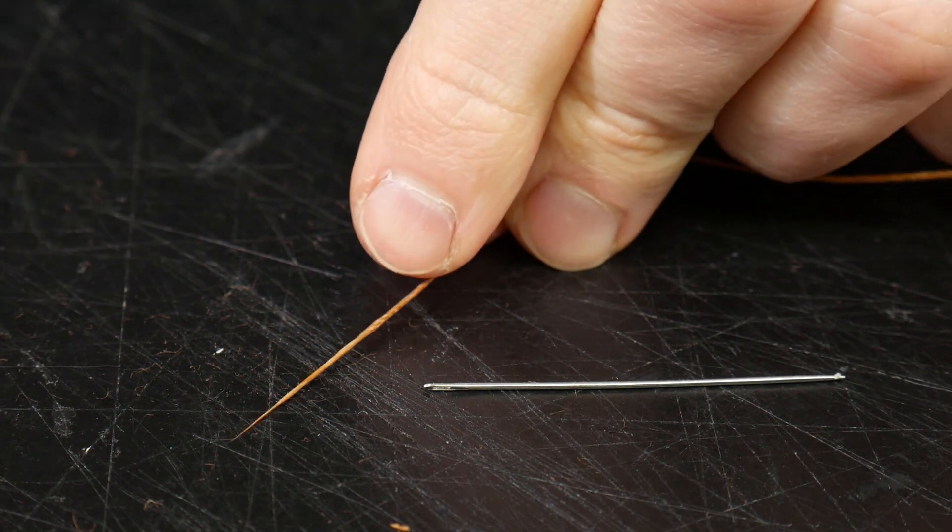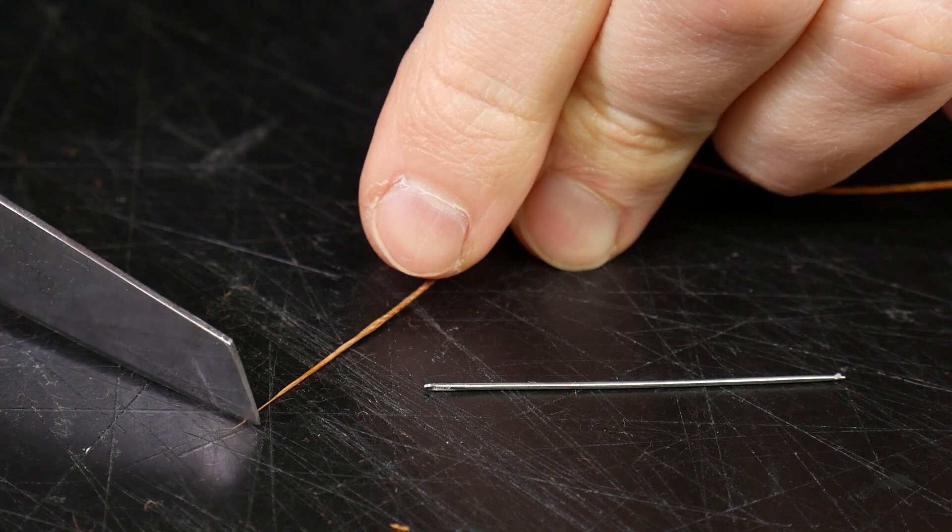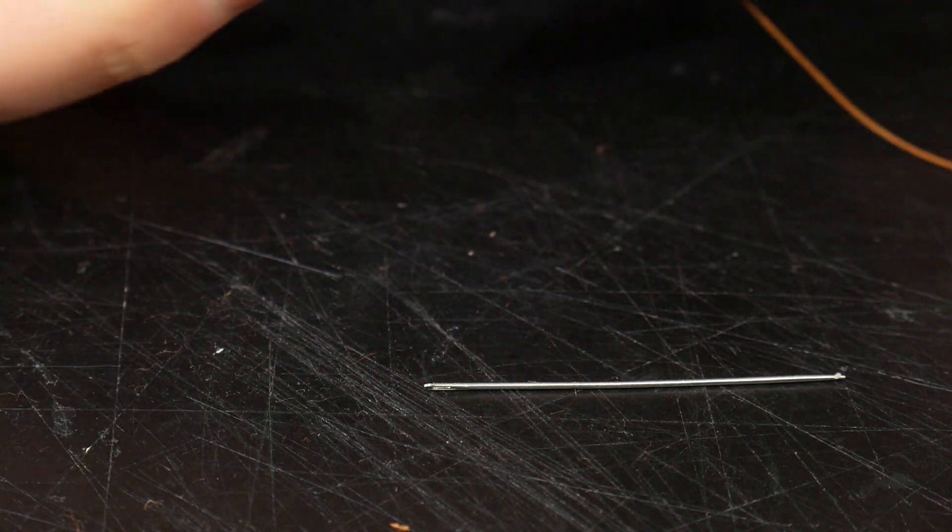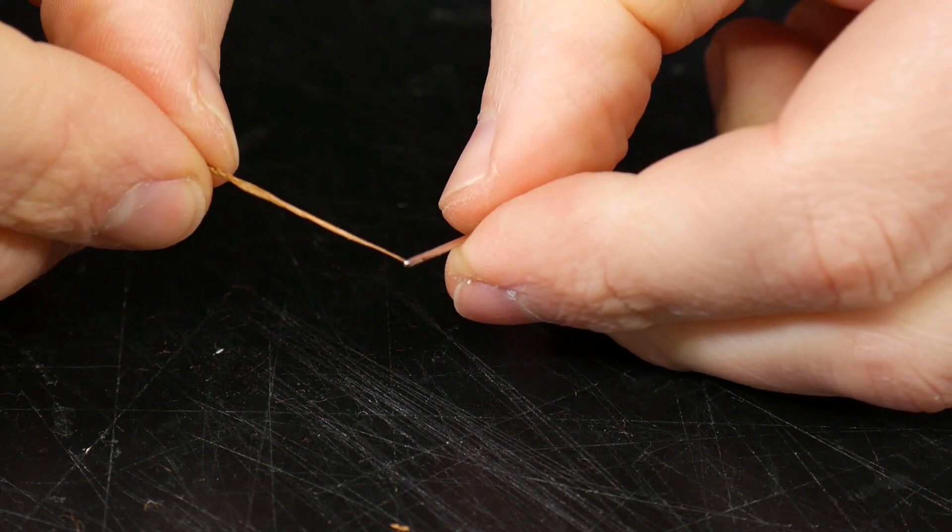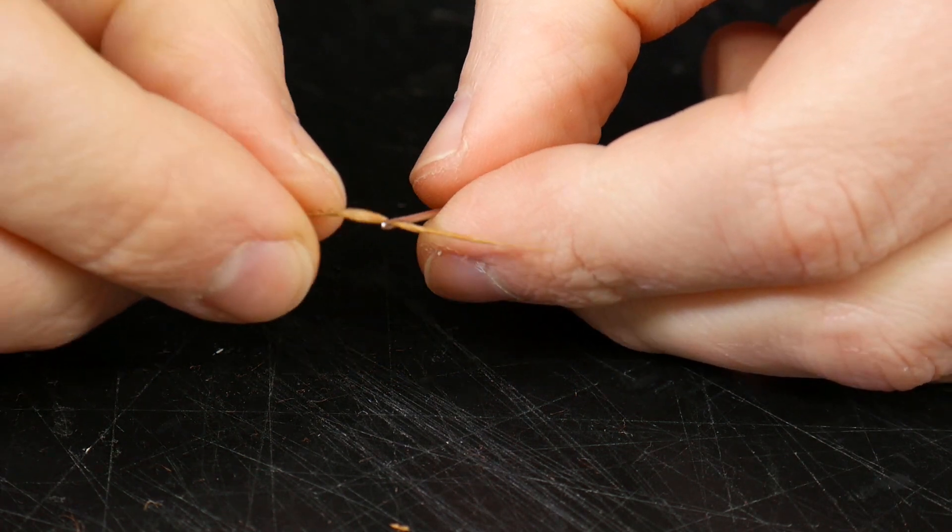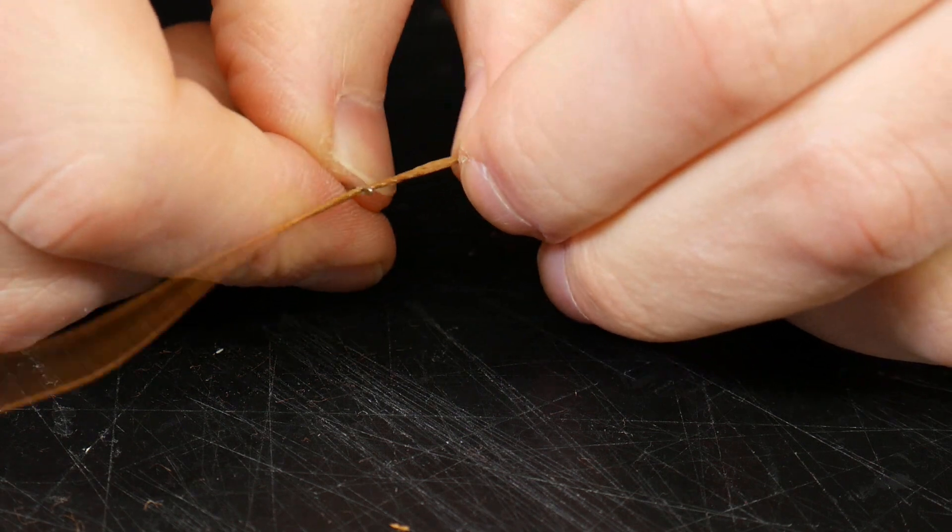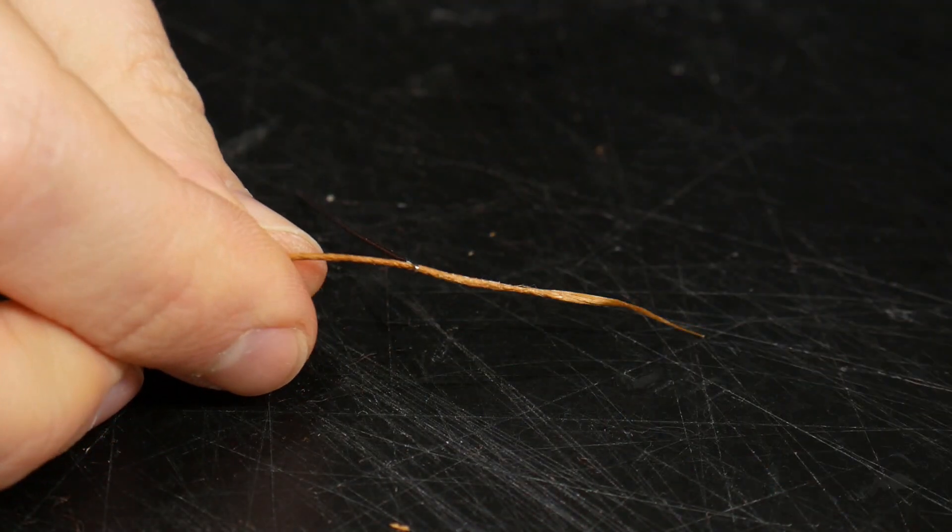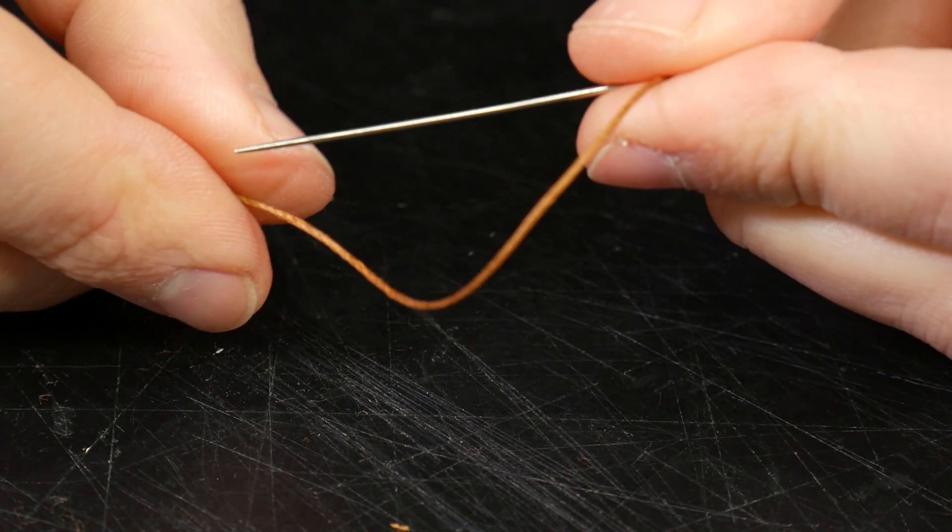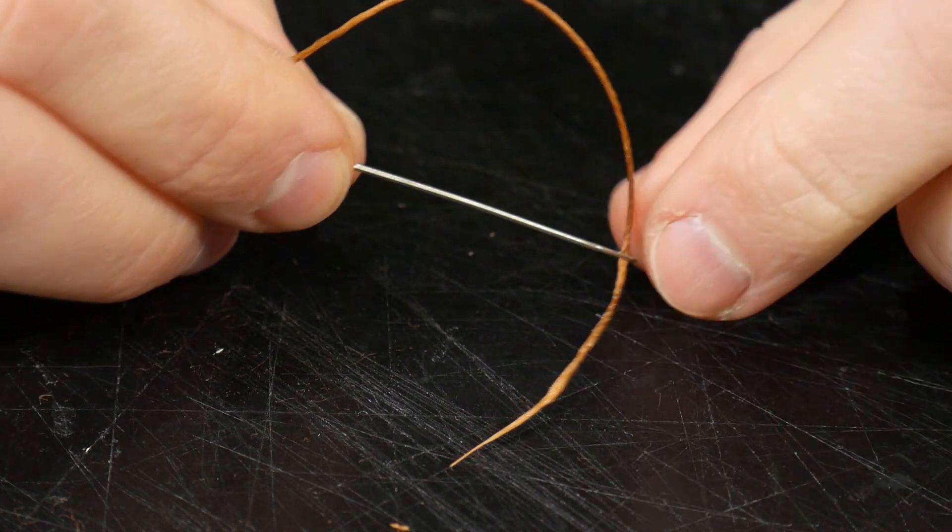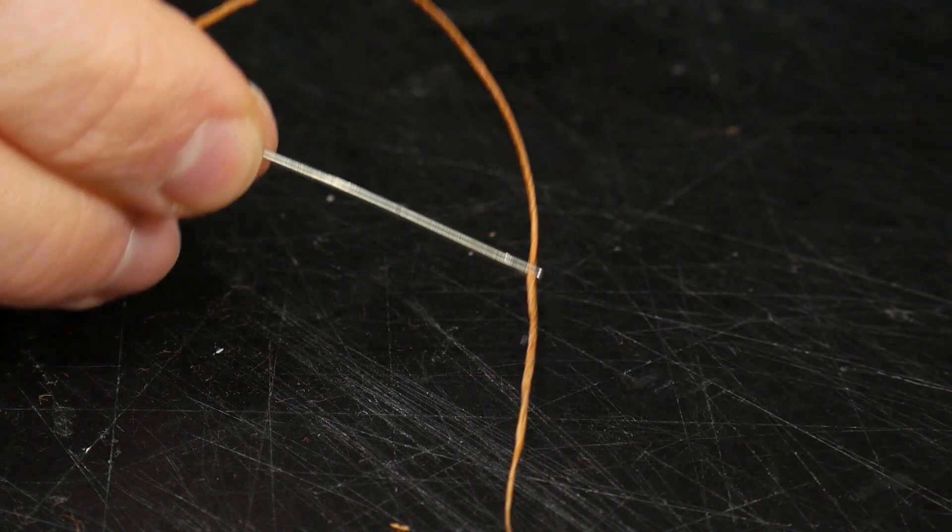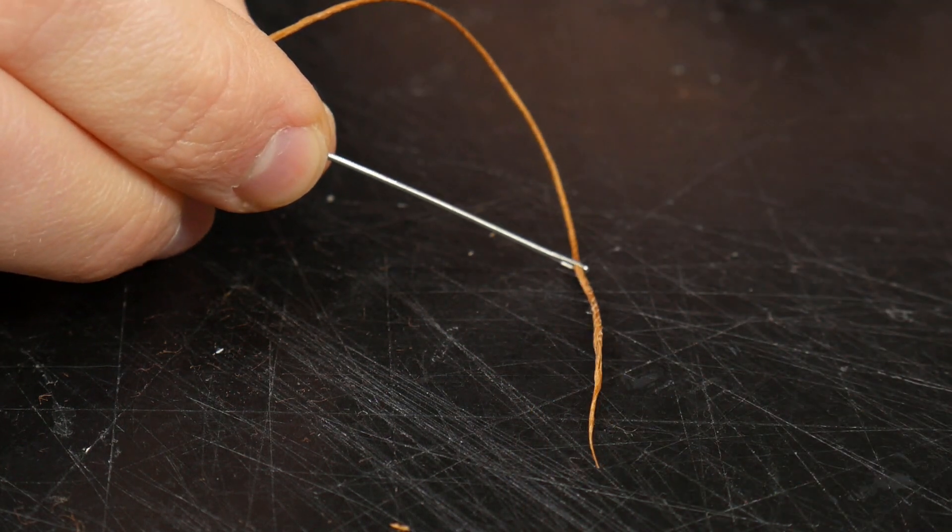Now once you've got that, you can just take off the very end like so. And now you can take your needle, place it in, and once you're on to the main part, you can then turn it over and start locking your needle in place. So that is the traditional method of threading a needle where you have thick thread through a smaller needle.